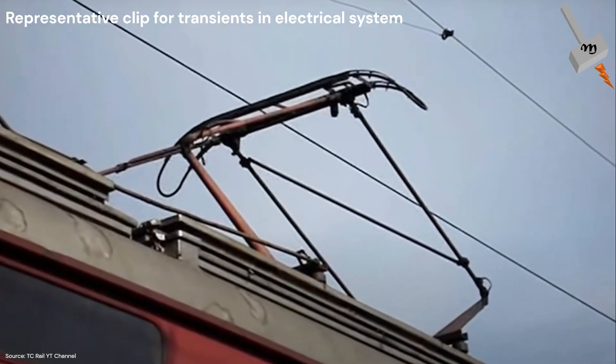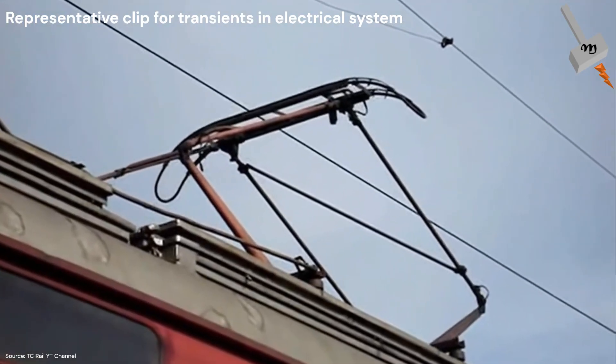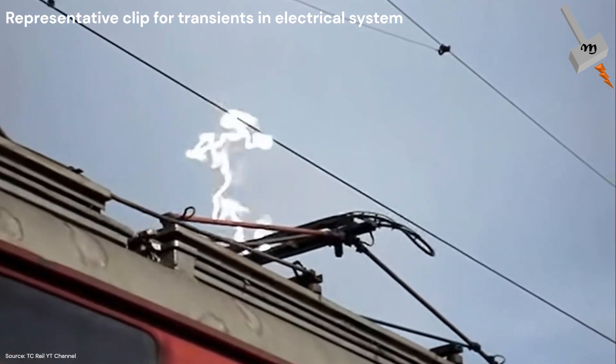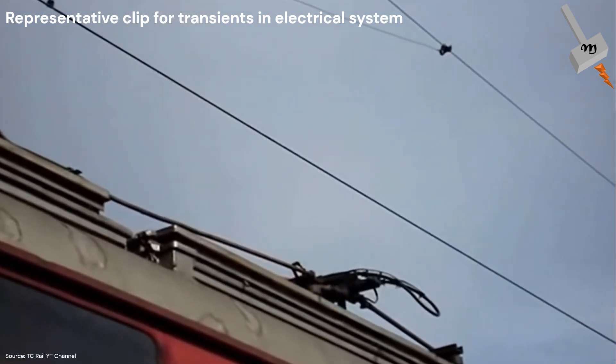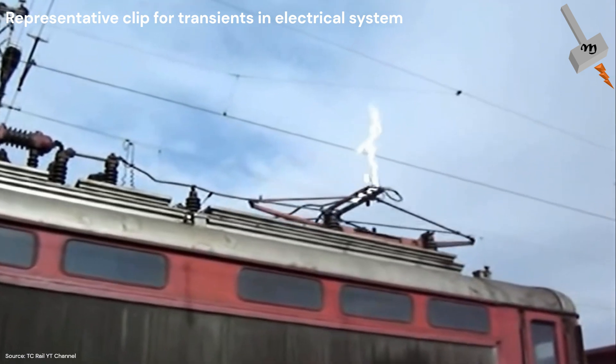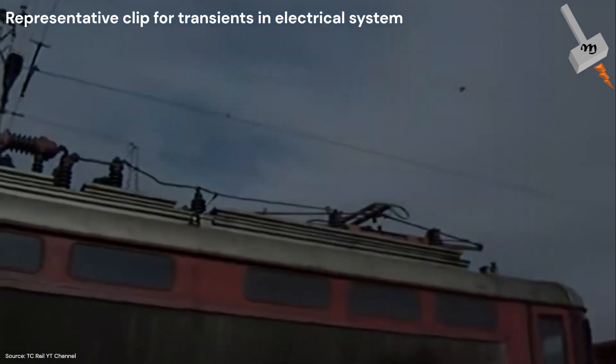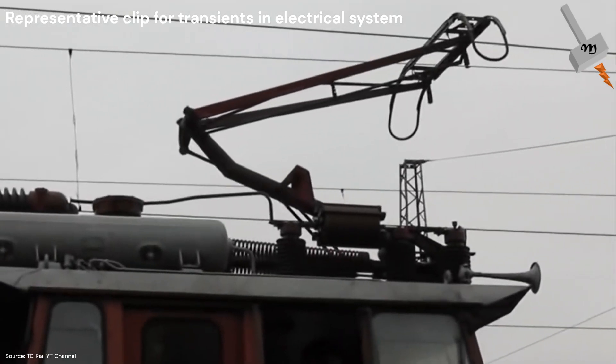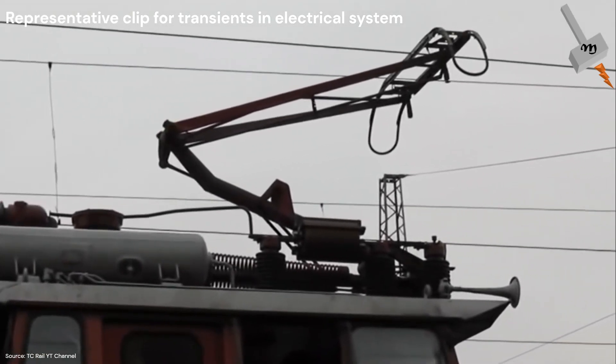When electrical systems rely on the efficient current chopping capacity of devices like vacuum circuit breakers or SF6 circuit breakers, they accidentally create a new challenge. But how is transient voltage generated?